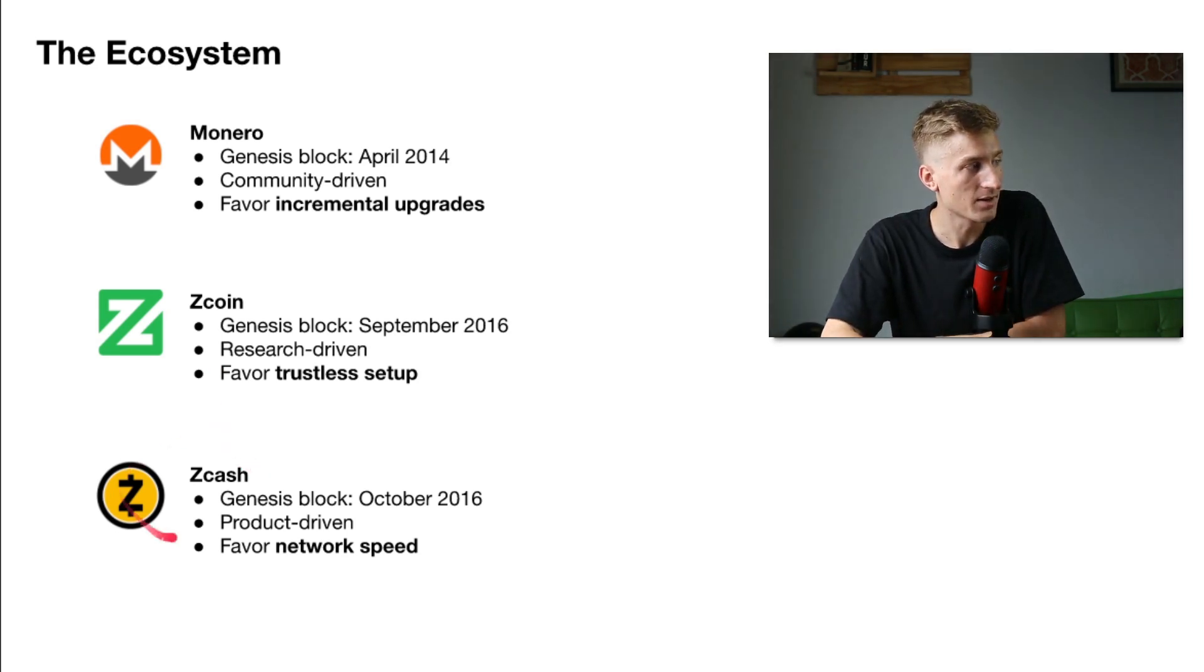Zcash, on the other hand, different project. They had a business plan from day one. For them, they really wanted to integrate with the legacy financial systems. So network speed was of big importance. So they embraced the trusted setup. And as a result, they had a faster network speed from day one. With the release of Lelantis, now, Zcoin is going to have the same speed and size and scalability as Zcash, but without that trusted setup. And unlike Monero, these Zcoin transactions are truly impossible to unwind.